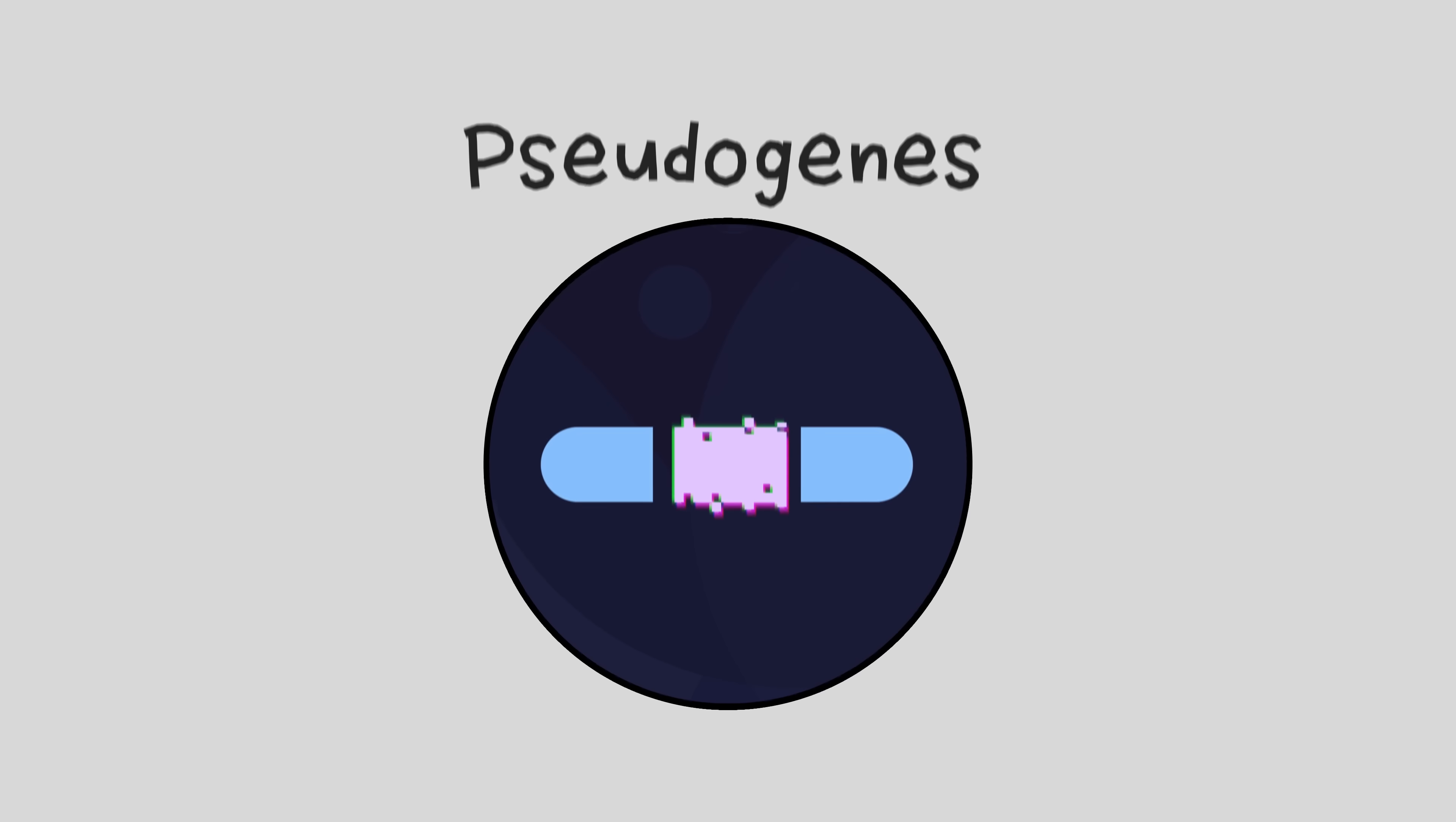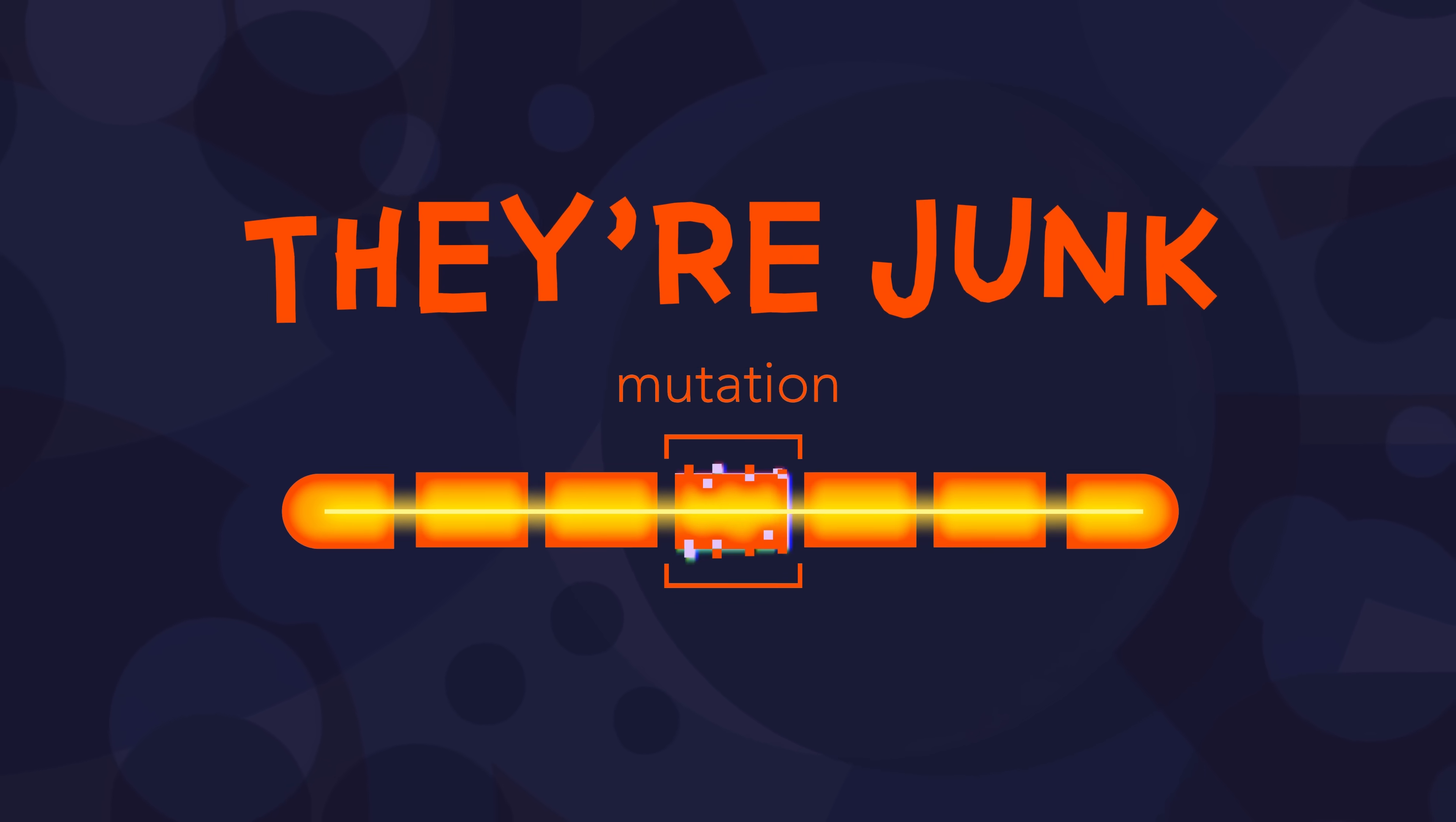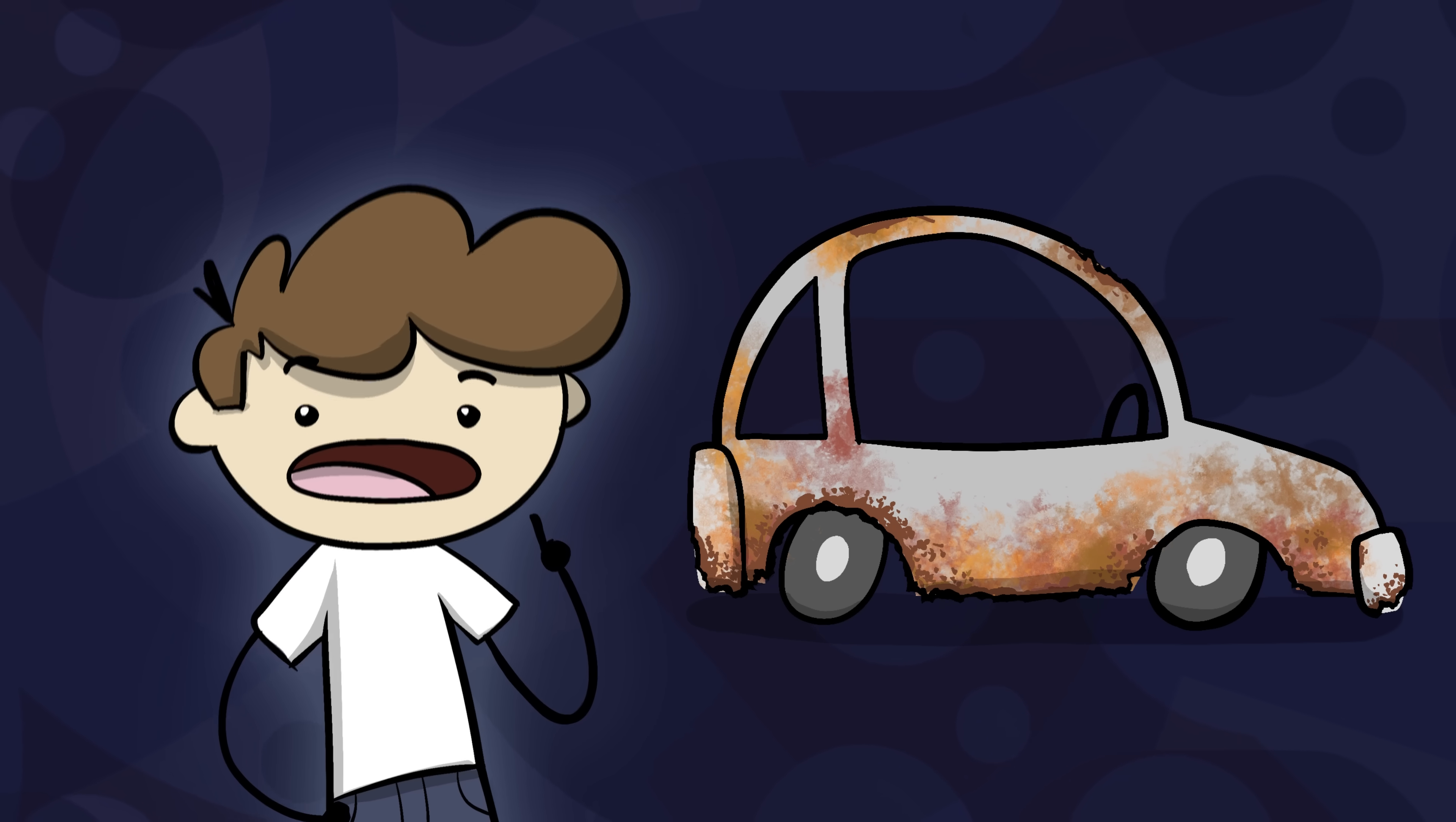Many evolutionists cite things called pseudogenes and ERVs as proof of evolution in junk DNA. Pseudogenes are sections of DNA that look like functional genes, but are thought to have a mutation that stops them from working. In other words, they're junk. But even if that was the case, pseudogenes wouldn't necessarily refute intelligent design any more than a rusty broken-down car refutes Ford. No one thinks the broken state of a thing proves it wasn't originally designed.